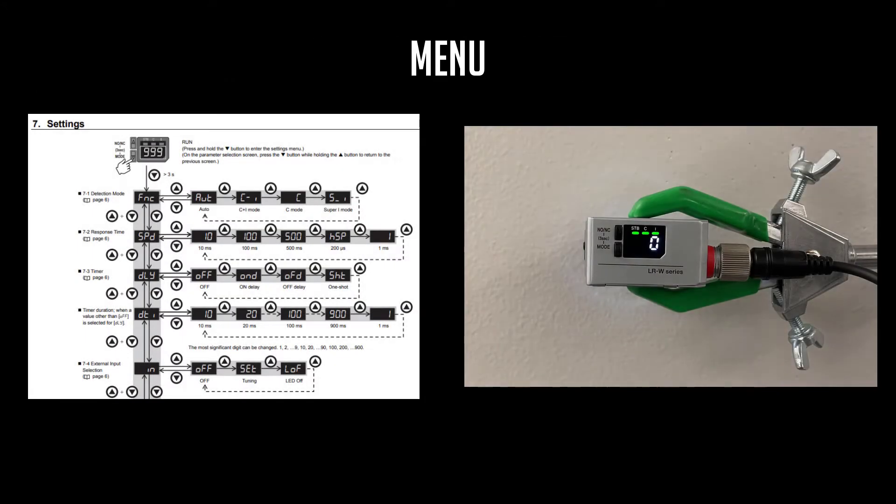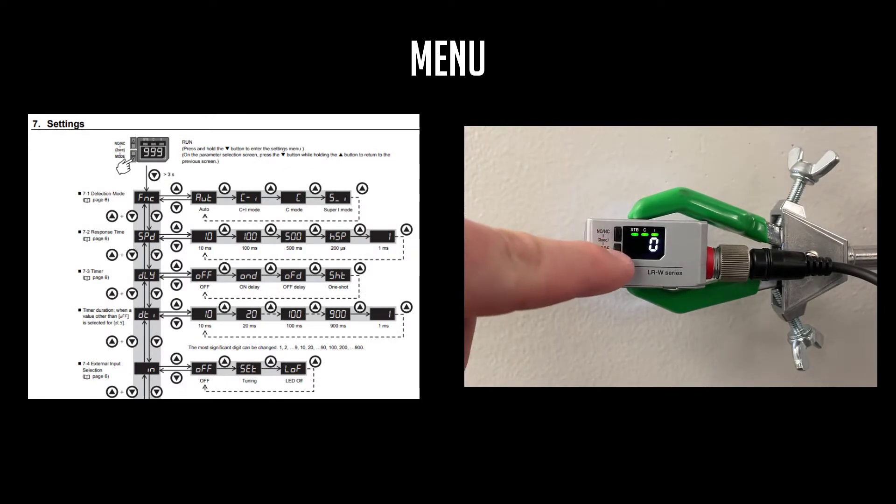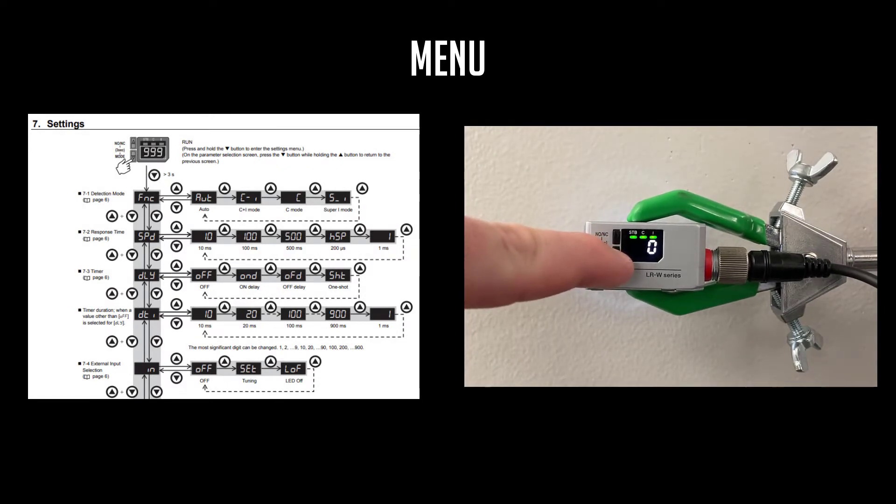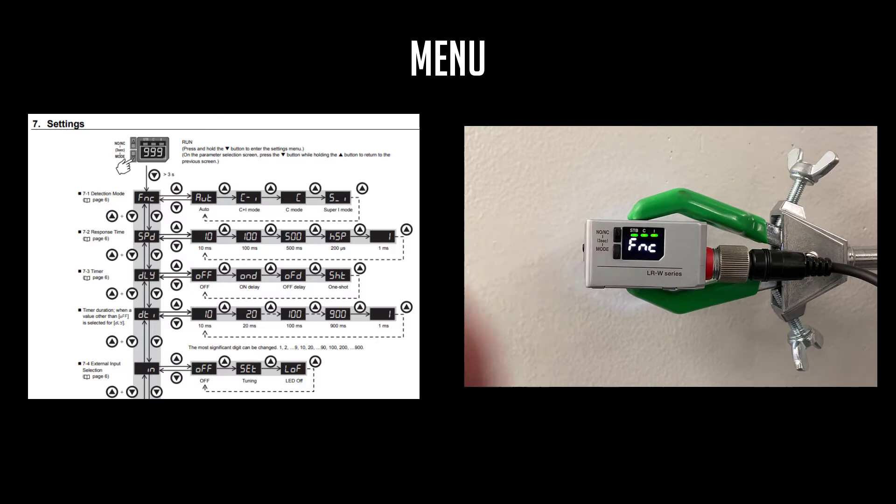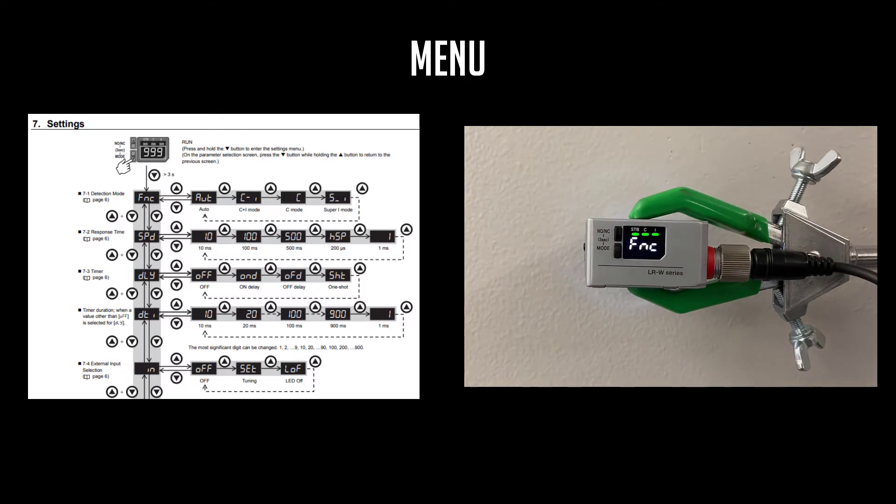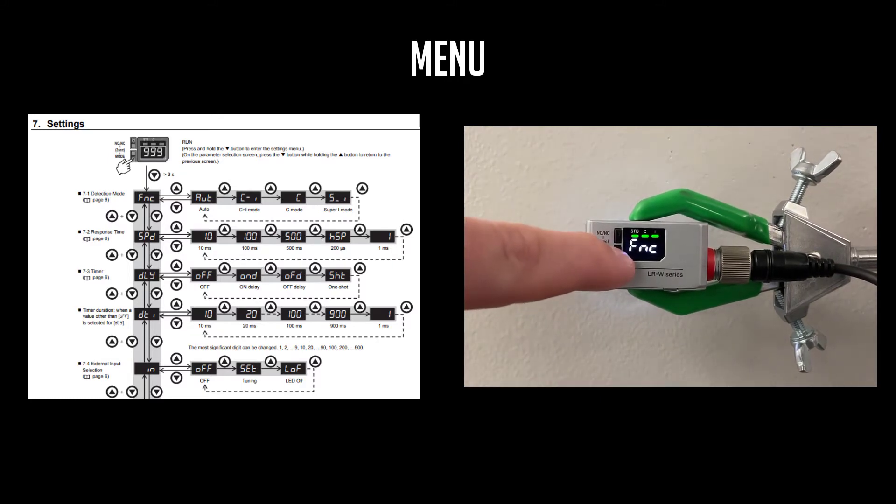If at any point you need to change any of the settings on the LRW, hold the down button for three to five seconds to open up the settings menu. Here you can tap the down button to cycle through things like detection modes, response time, output timers, among other things.